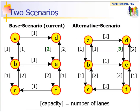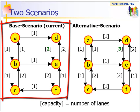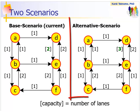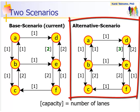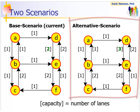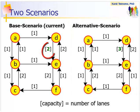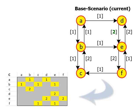We will explain the concept of traffic assignment based on IFN through numerical example with two simple scenarios. Here is the base scenario, which represents the current condition. And here is the alternative scenario, which represents the proposal to change the network. The numbers represent the link capacity in terms of the number of lanes. The only difference between the two scenarios is the increase of the number of lanes in link DE.